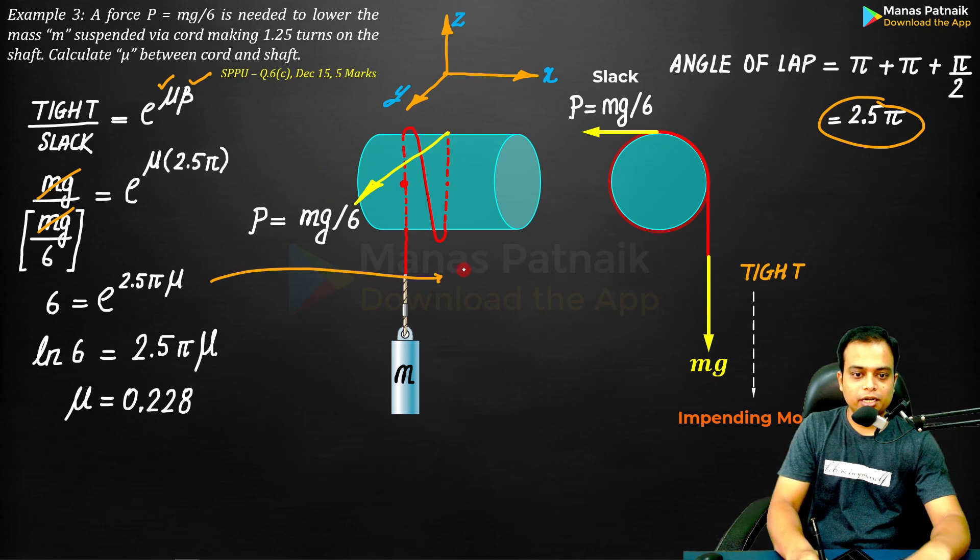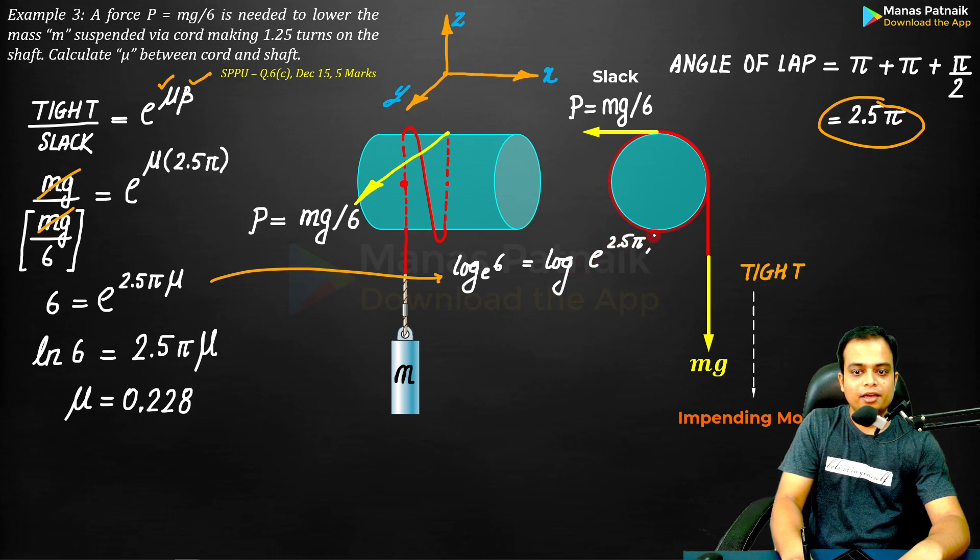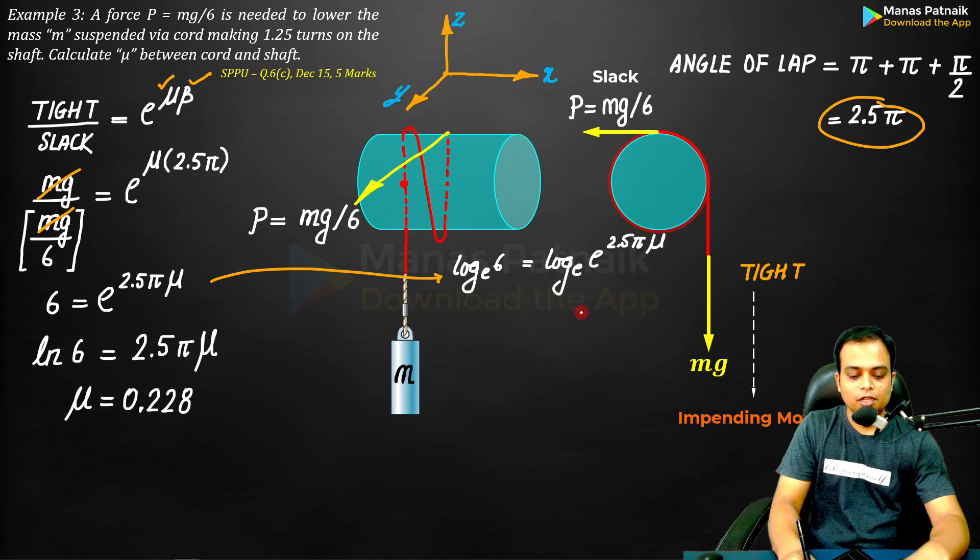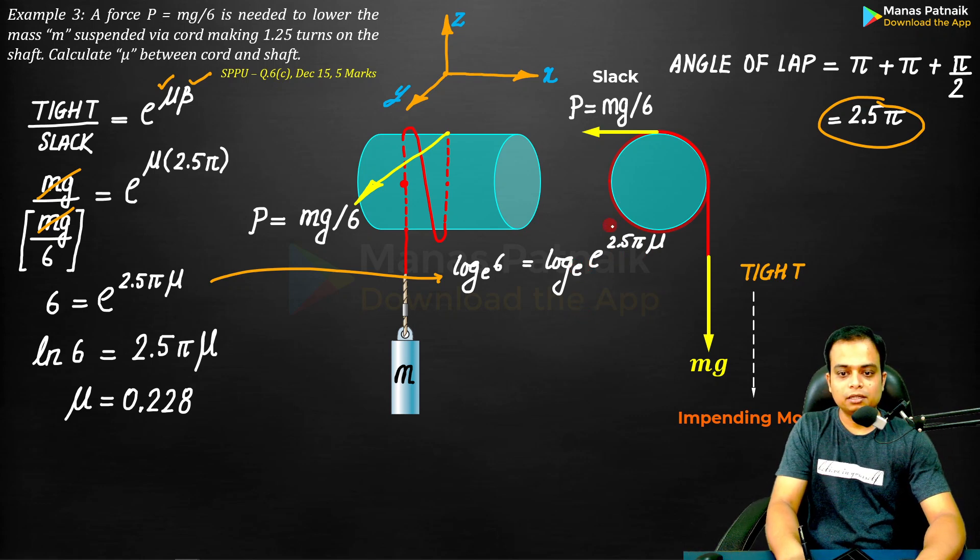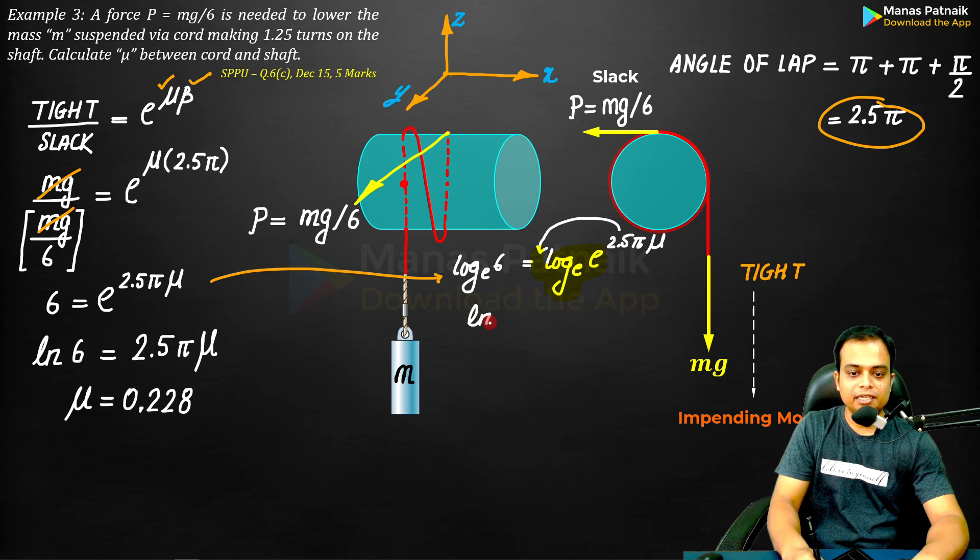You can take natural log both the sides. What will happen? Log 6 base e is equal to log e raised to the power 2.5π μ, again base e. This will shift over here - this power will become a coefficient and this entire term log e base e will become automatically one. So this can be written as ln 6 is equal to 2.5π μ.